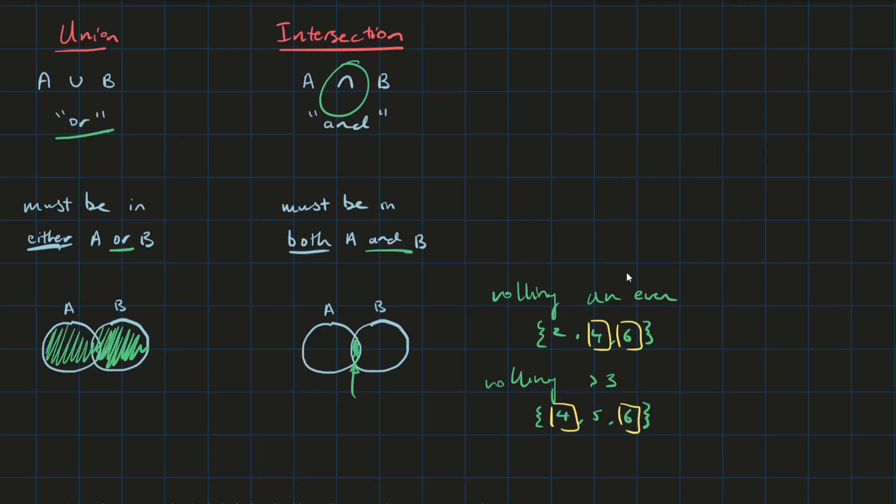Now, if we wanted to find the union, then it's just combining all the elements together. So it'd be 2, 4, 5, and 6. Obviously, we don't have to repeat multiple outcomes twice because it's already included once. So there's no need to put 4 in twice or put 6 in twice because they're single outcomes. We just put one instance of it into our union.